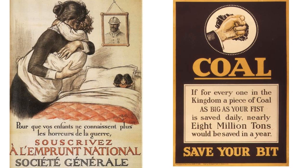With this poster we can see another example of a very important raw material during the war: coal. Coal was useful — in those days useful to almost every dimension of production, from the production of electricity to burning coal in factories to have the machines work. Coal was also used at home in many British cities as a source of heating. On this poster you can read that if everyone in the kingdom saved a piece of coal as big as your fist daily, nearly eight million tons would be saved in a year. That was a call for an economical attitude. The goal was not only to avoid a shortage of coal but also to keep its price rather low by limiting demand.